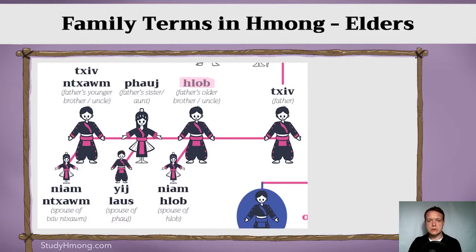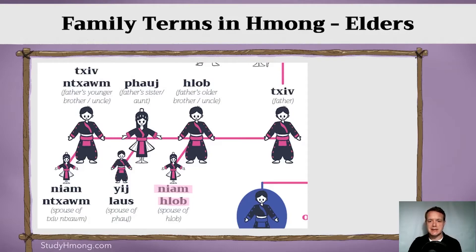What about your father's older brother — a brother that's older than him? That older uncle, who is older than your father, has a specific term. His wife you would call Niya. In many of these cases, Niya is used along with the name of the husband — it's kind of like saying 'the wife of.' It is the appropriate term in Hmong. For example, the wife of Hlau would be called Niya Hlau.